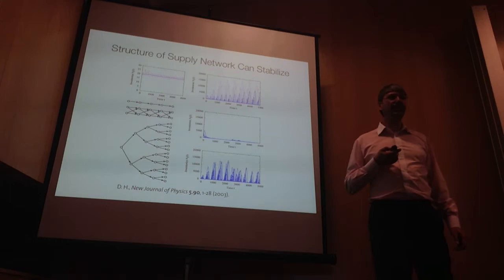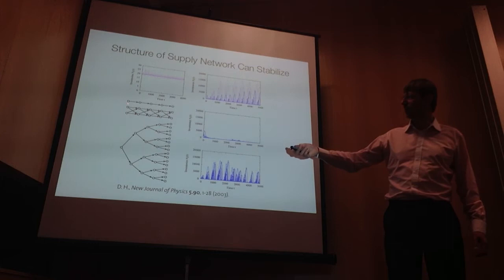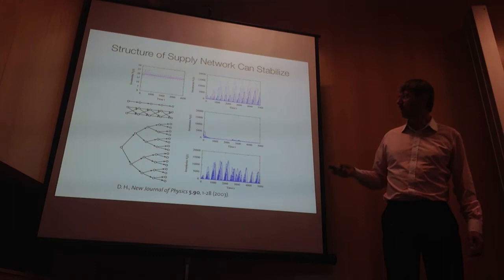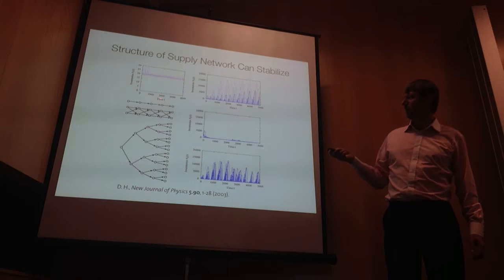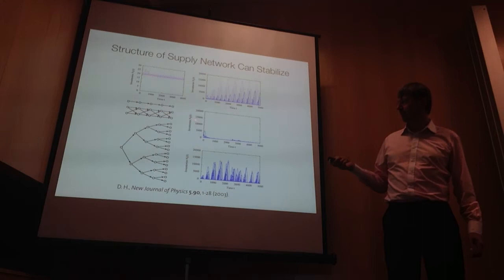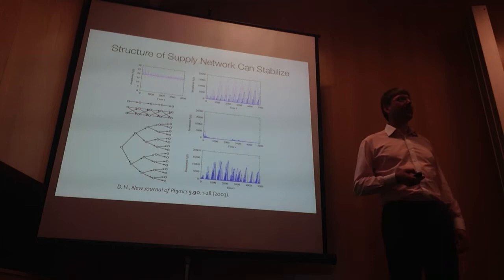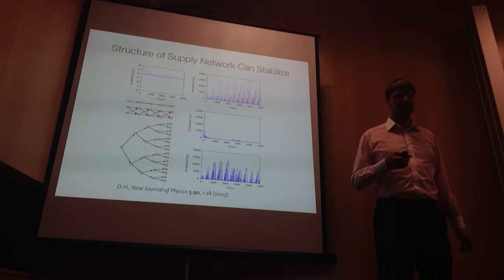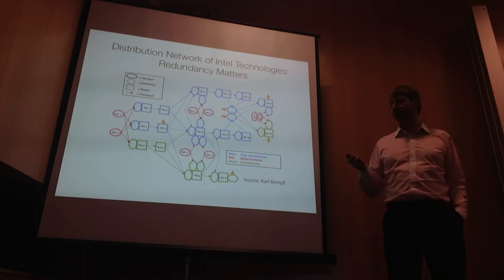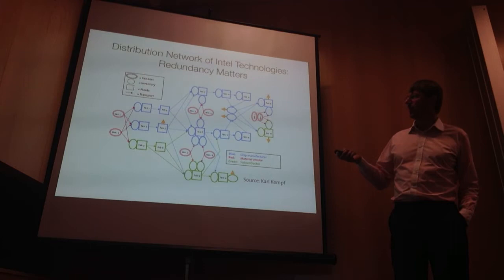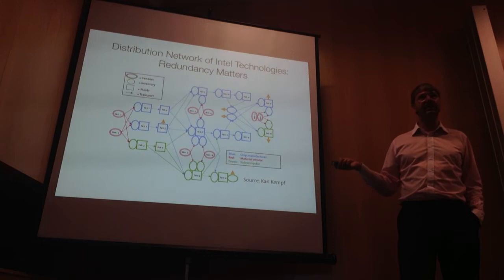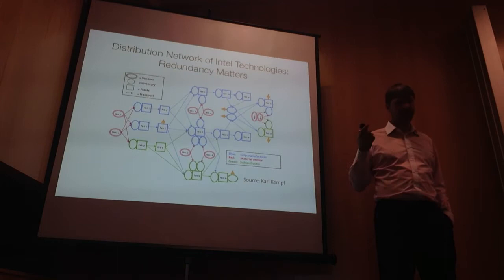The question is: can we dampen those oscillations? I've looked into different kinds of supply networks — a supply chain, a ladder structure, and a hierarchical structure — and here are three dynamical outcomes. While the supply chain produces terrible, large oscillations, the ladder structure with some redundancy in delivery is pretty much damping out all the oscillations. By changing the network structure, you can stabilize the economy. Interestingly, this is the supply chain structure of Intel Technologies, and they're doing pretty well.